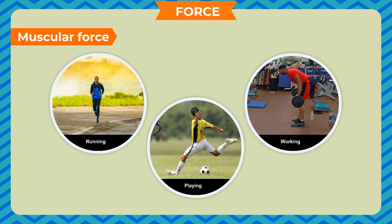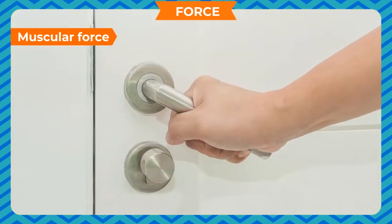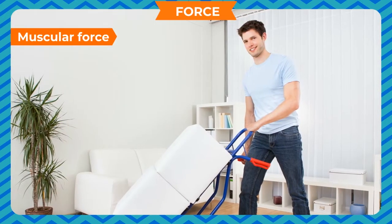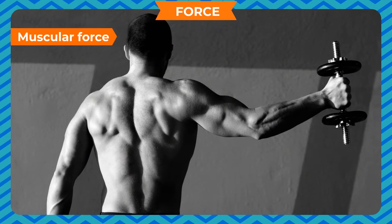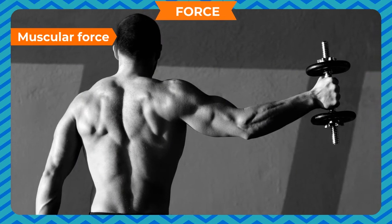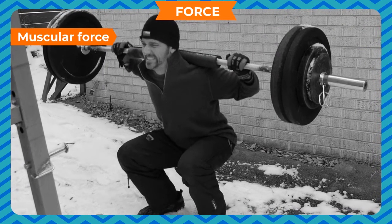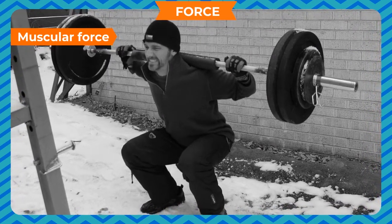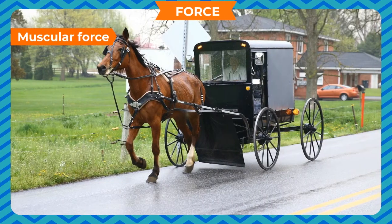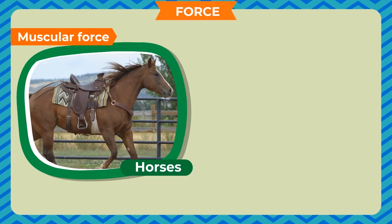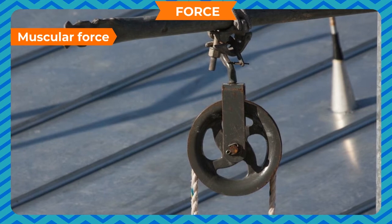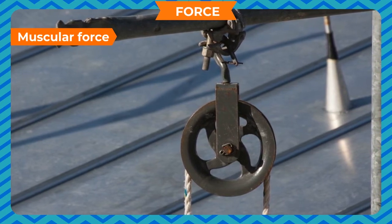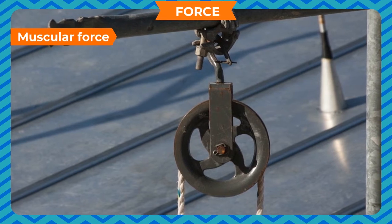Muscular Force: The force applied by our muscles in doing any activity is termed muscular force. Pushing the door, lifting a heavy box, and opening the table drawer all require muscular force, also referred to as biological force. At times, human muscular force is not sufficient, so we take help from other living things like horses or bullocks. When animal force is also insufficient, we take help from non-living things like pulleys or other simple machines.